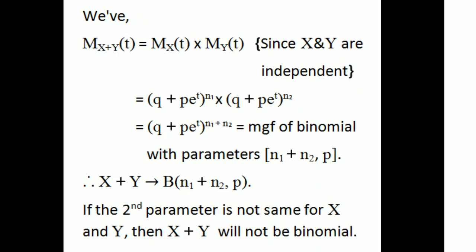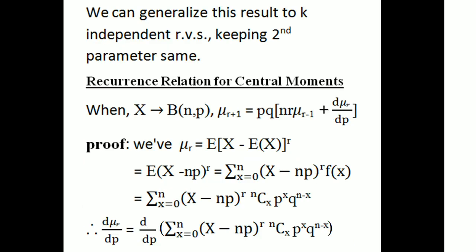If the second parameter p is not the same for X and Y — that is, if X has parameter p₁ and Y has parameter p₂ — then the additive property of the binomial distribution does not hold. X plus Y will not follow a binomial distribution unless the second parameter p is the same for both X and Y.